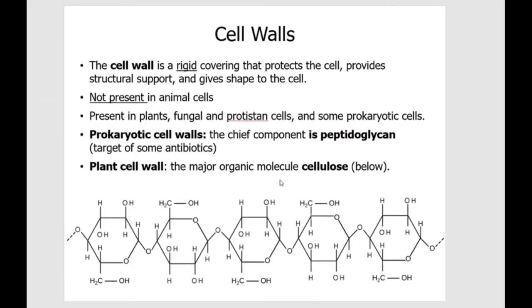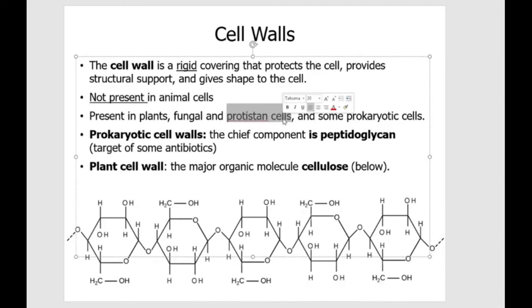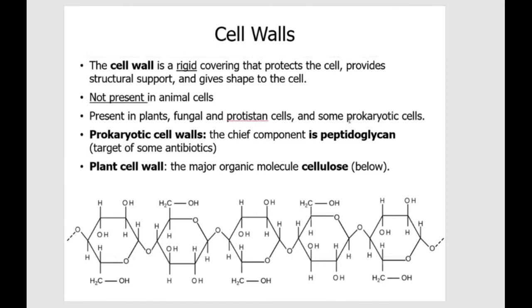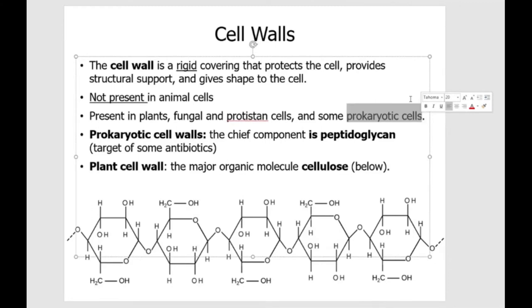The first structure we're going to look at is cell walls. Animal cells do not have a cell wall. For other organisms — plants, fungal cells, or certain protozoa — they do have a cell wall. Some prokaryotic cells also have a cell wall. Prokaryotic cells are organisms in domain Bacteria and domain Archaea; they do not have a nucleus and their DNA is not enclosed. The cell wall is rigid, so it protects the cell, provides structural support, and gives shape to the cell.